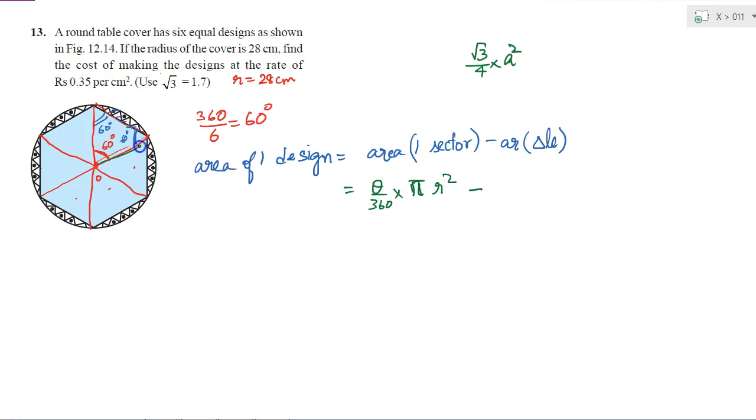But here, the length of the side is same as the radius. So that will be √3 by 4 into radius². So this is a standard value for area of an equilateral triangle. So if I use it, I will get this is equal to √3 by 4 into r².